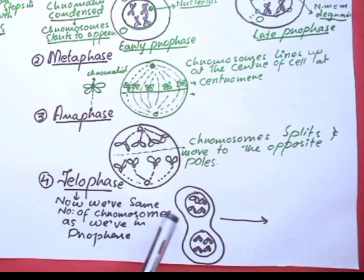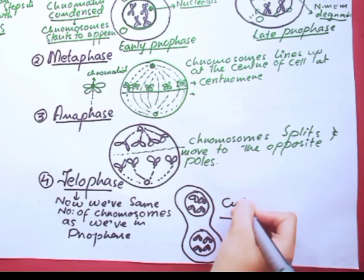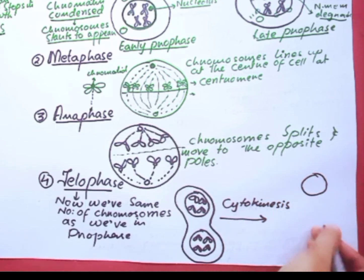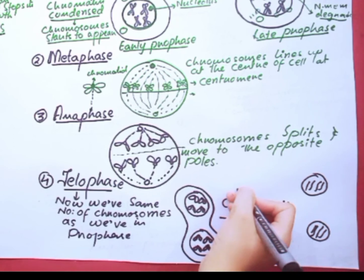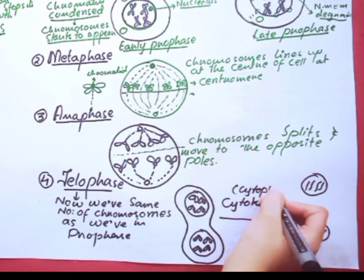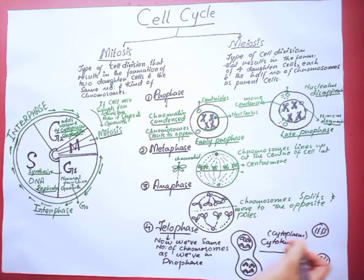Now in telophase, this cell is further going to cytokinesis in order to form two daughter cells. Cytokinesis means the division of cytoplasm.